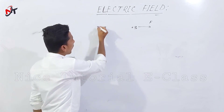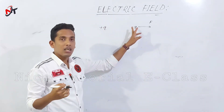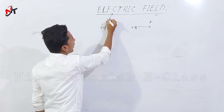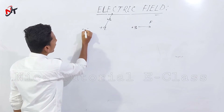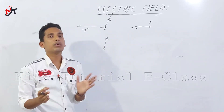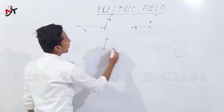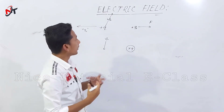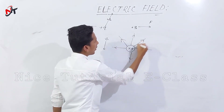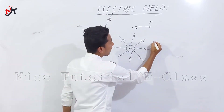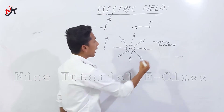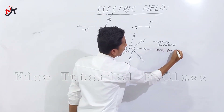The test charge will experience a radially outward force — that is a force of repulsion. So, if you have a positive charge, the electric field will be directed radially outward, away from the positive source charge.